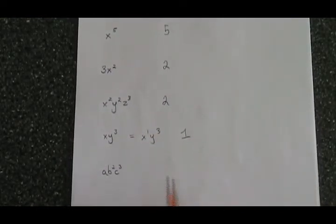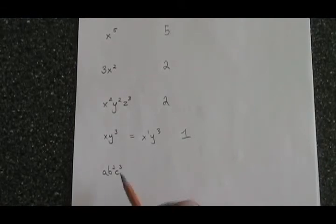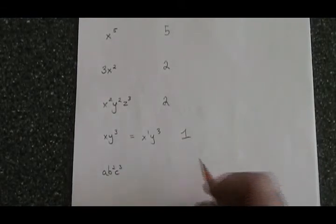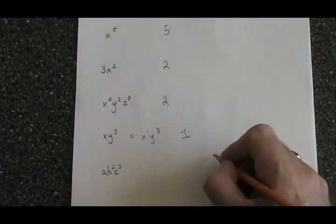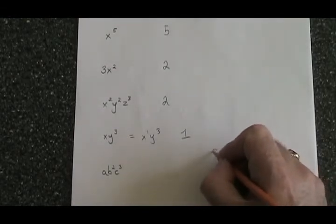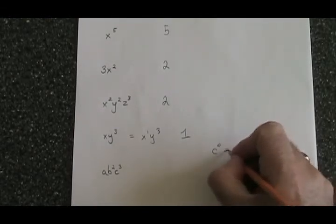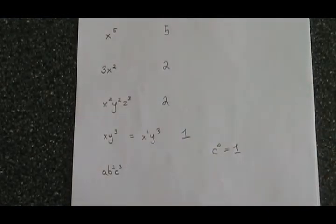In this case, we don't have an x at all. We can still answer this question because there is a rule in polynomials that any variable to the power of 0 is equal to 1. This is a law of exponents that we have to know.